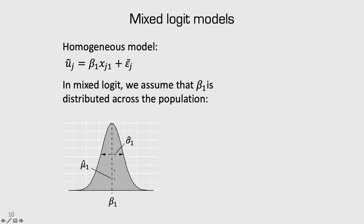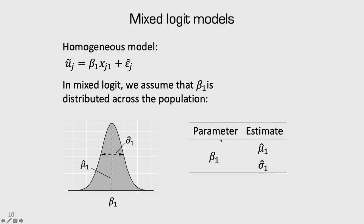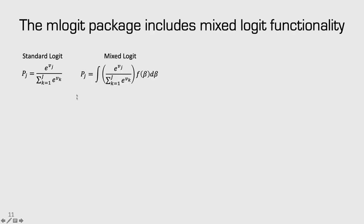The average effect for beta 1 is the mu term. So when I estimate my model, I'm not estimating beta 1 directly. Instead, I'm estimating two parameters — mu 1 and sigma 1 — which describe the distribution of beta 1.